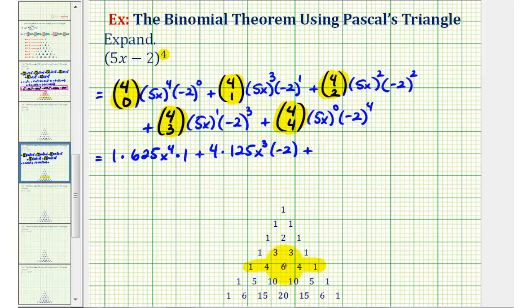Plus 4 choose 2 is equal to 6, so we have 6 times 5x squared, that would be 25x squared, and negative 2 squared is positive 4.